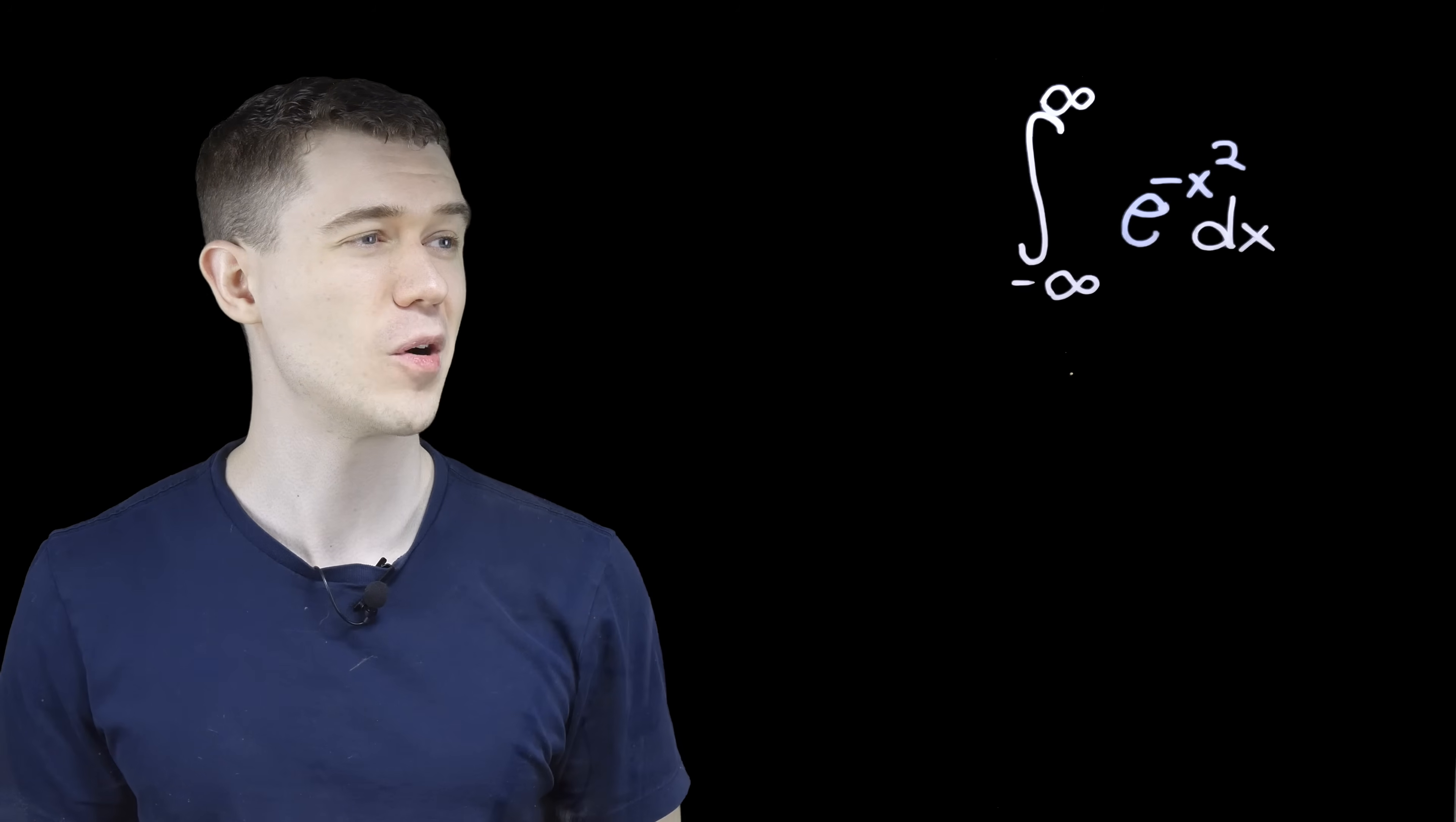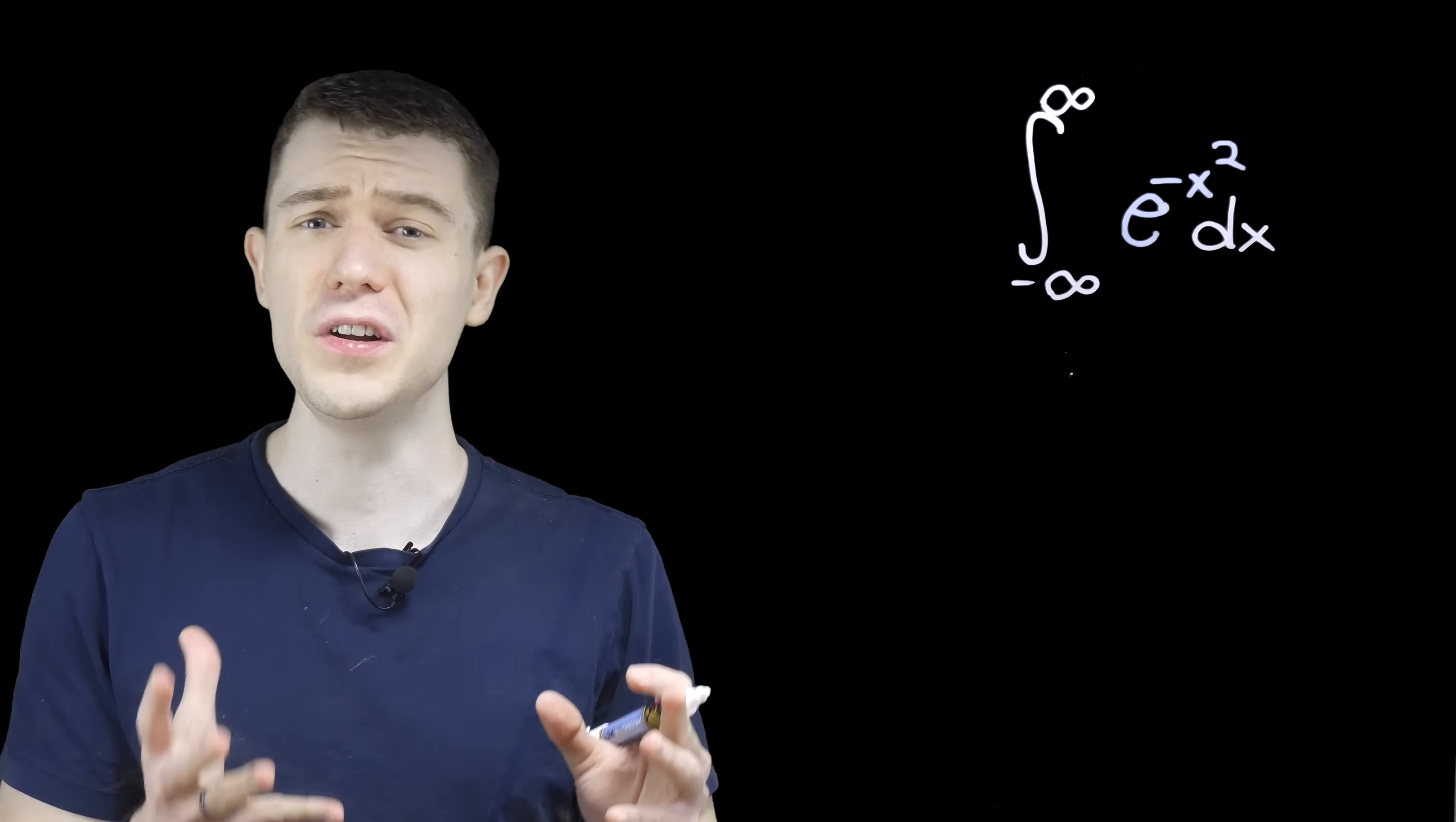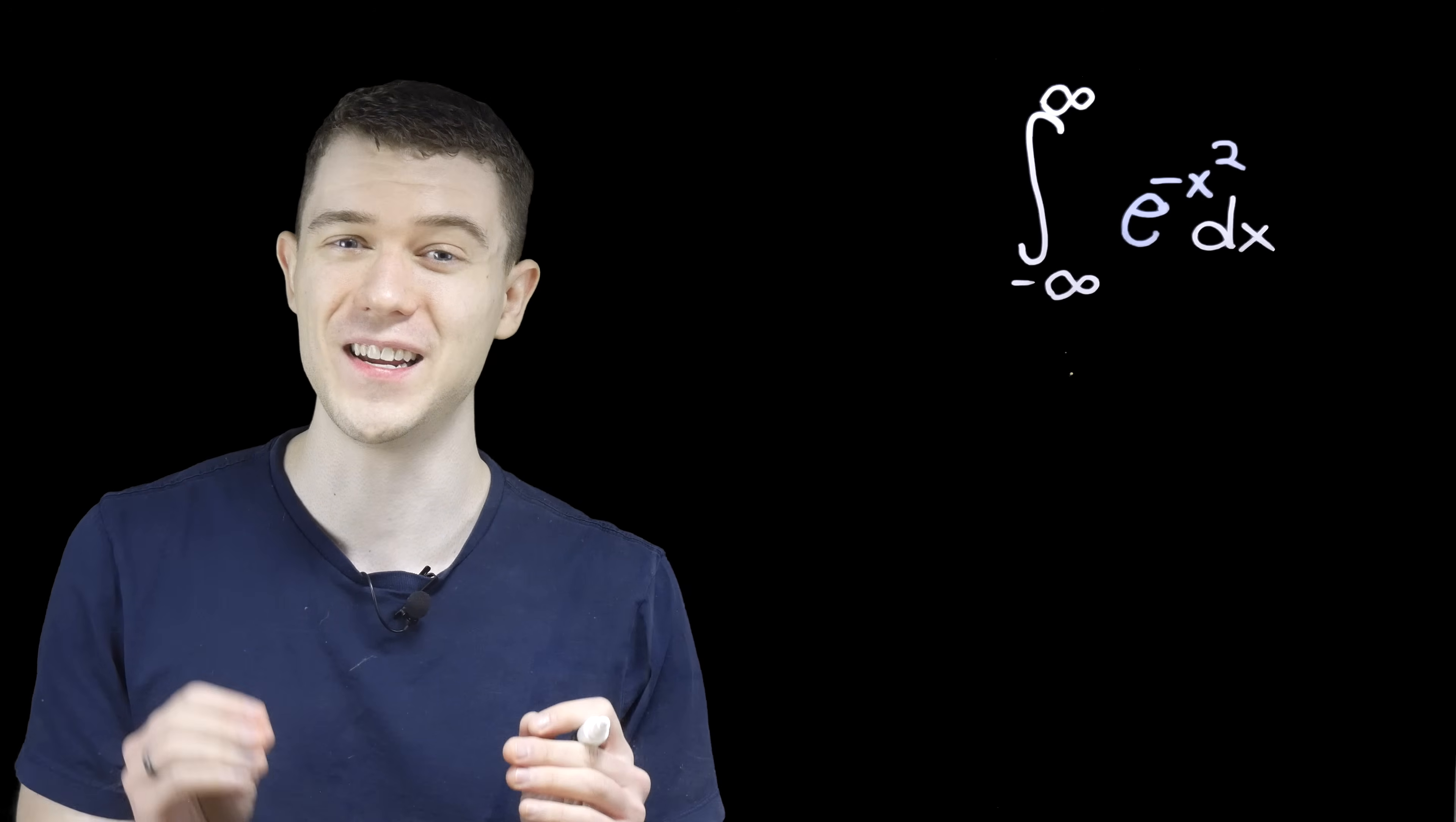So this is now our problem, the definite integral from minus infinity to infinity of this function, e to the minus x squared dx. And what you may notice is that none of the regular integration techniques work very well here. There's no u substitution or integration by parts that's going to be able to solve this. We could use a power series, but that's going to get a little bit clunky. So here's the trick, here's the technique.